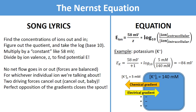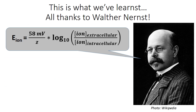No net flow goes in or out. For each individual ion, two driving forces cancel out. Perfect opposition of the gradients closes the spout. This is what we've learned, all thanks to alternates.